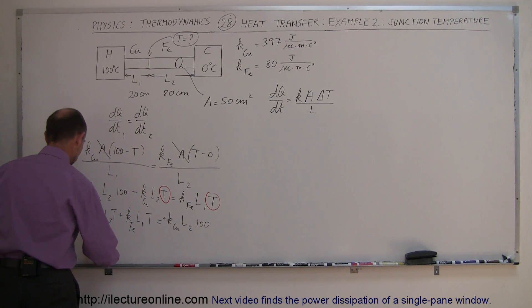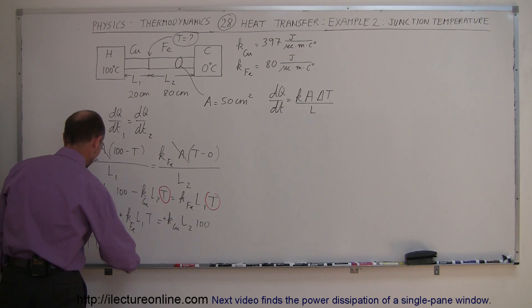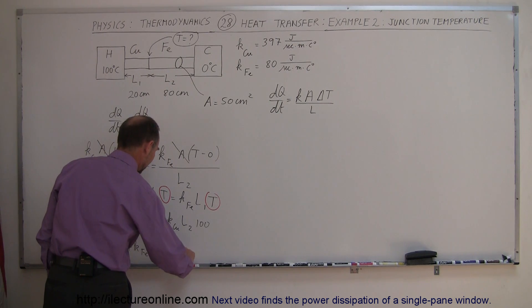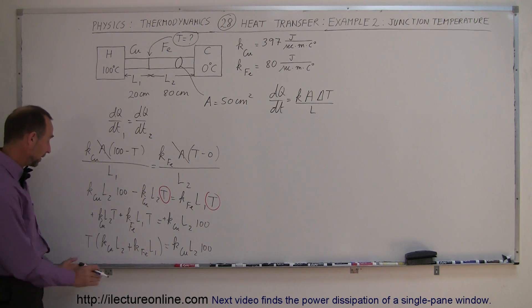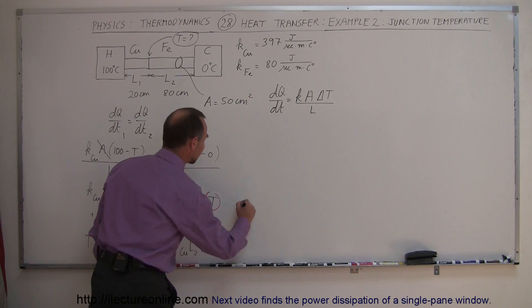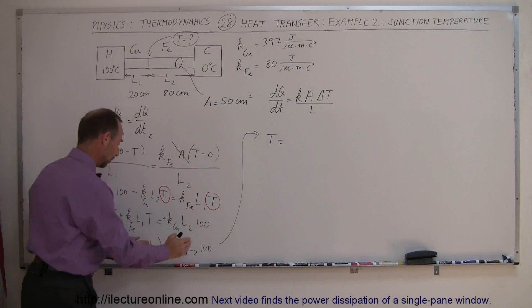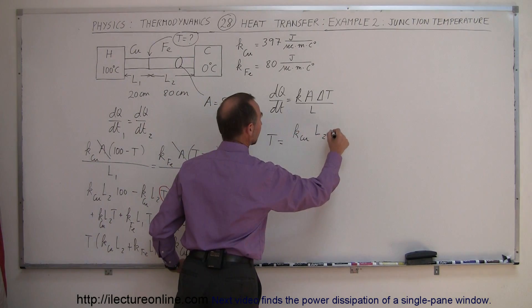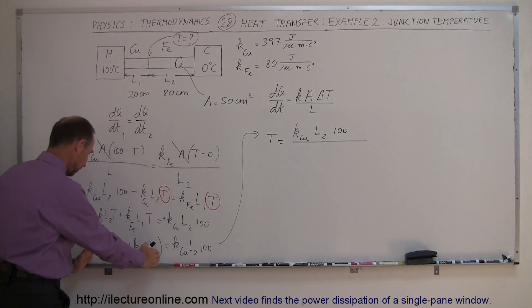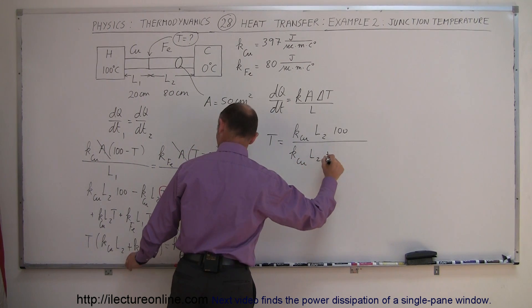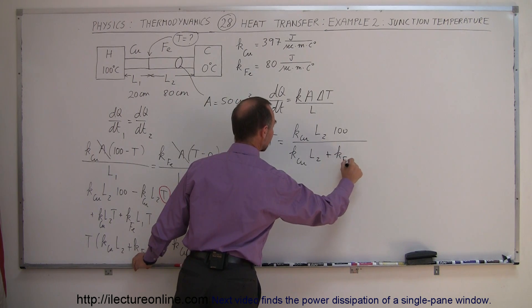Factoring out the T, so I now have T times K of the copper times L2 plus K of the iron times L1 is equal to K of the copper times L2 times 100. The next step would be to take what's in the parentheses and bring it to the other side, divide the right side by that quantity, and I'll do that right over here. So now I can say that the temperature is going to be equal to K of the copper times L2 times 100 divided by K of the copper times L2 plus K of the iron times L1.